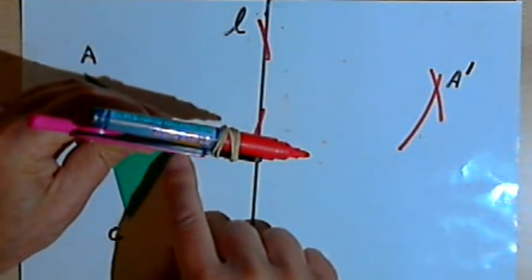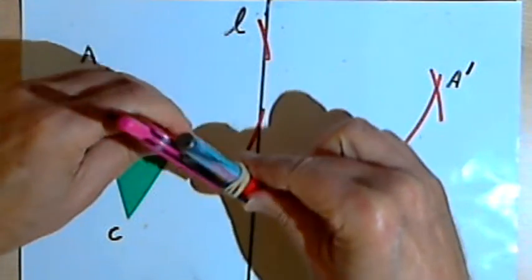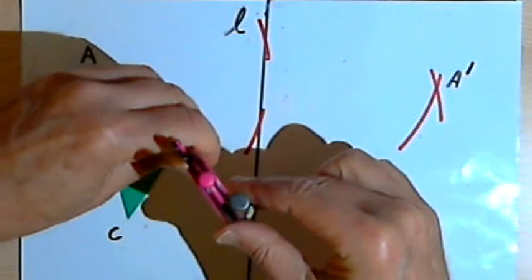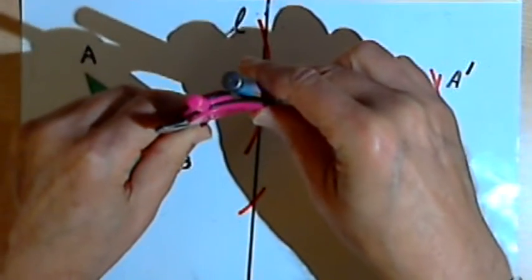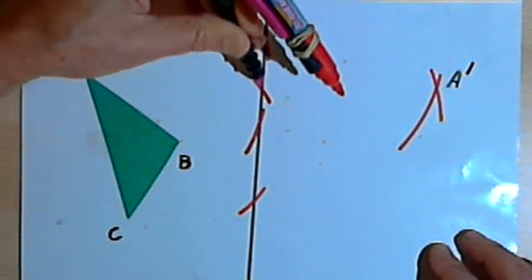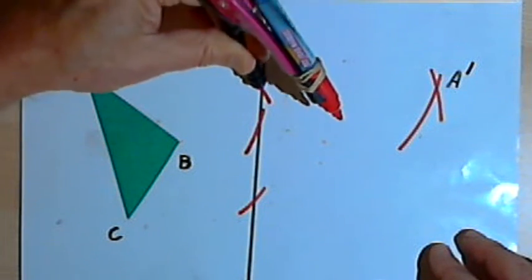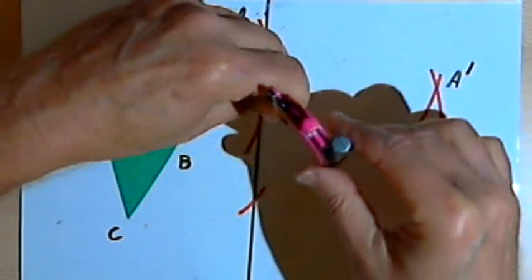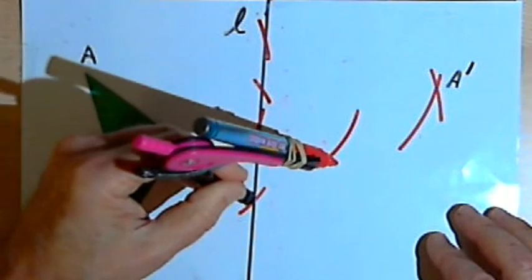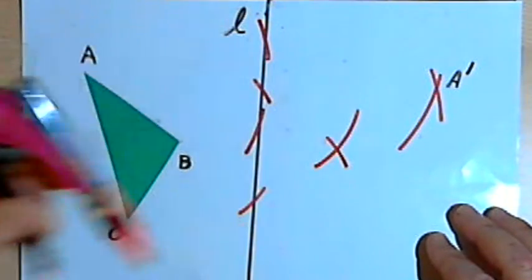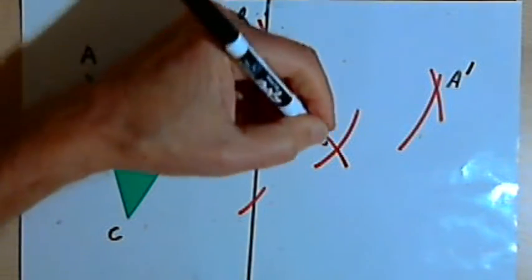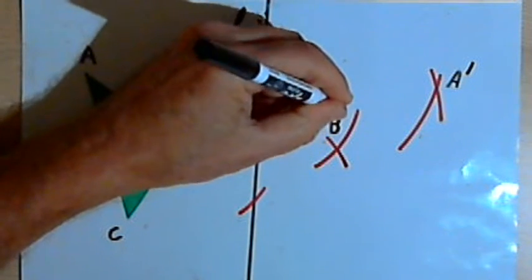So I'll set the compass point at point B, draw two more arcs that intersect line L, keep the compass setting the same, move it to each of those points of intersection, and draw two more arcs that intersect each other. Where they intersect each other will now be point B prime.